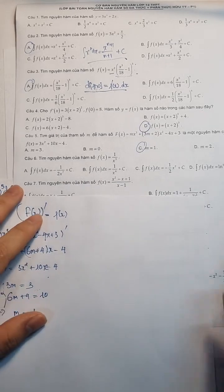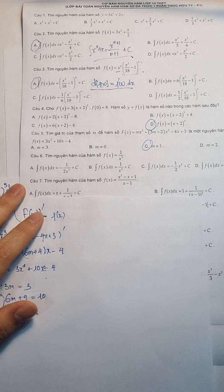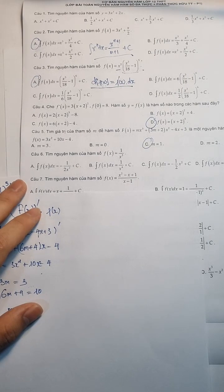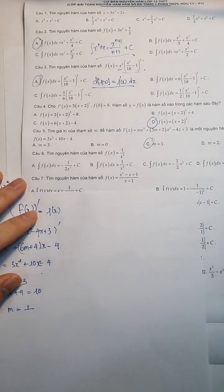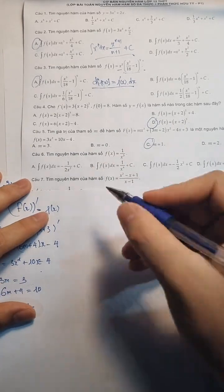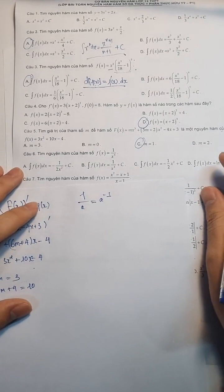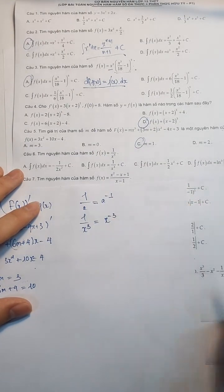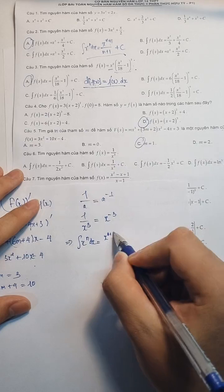Câu số 6 nhá. Tìm nguyên hàm của F(x) thì bằng 1 trên x³. Thì có tính chất: 1 trên A thì bằng A mũ âm 1. Thì bây giờ ta có là 1 trên x³ thì tức là bằng x mũ âm 3. Xong rồi đến đây các bạn áp dụng công thức: nguyên hàm của x mũ n dx thì sẽ bằng x mũ (n+1) trên (n+1) và cộng C.